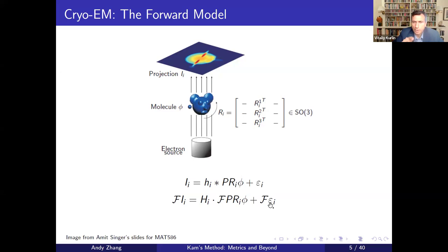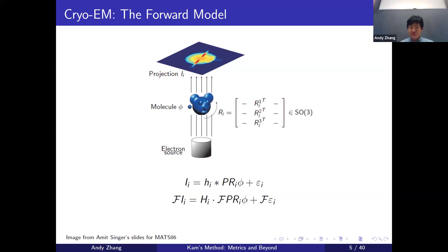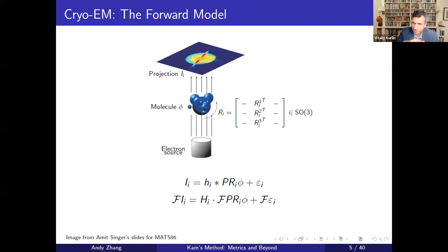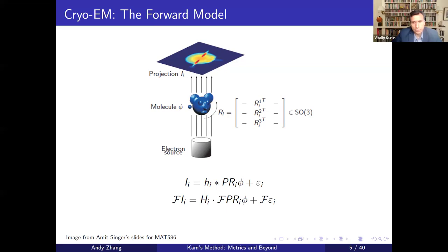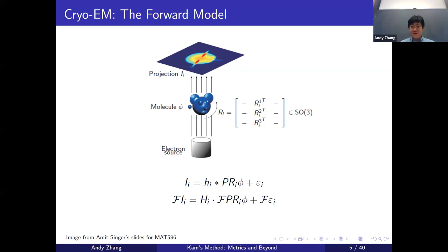R_i is a matrix, and P is a projection operator. The point spread function is essentially a Gaussian bell-shaped function with a certain deviation. In this model we have several parameters — the noise and the spread function — but when we do reconstruction, the only parameter we care about is the molecule. We'll talk more about that with expectation maximization.